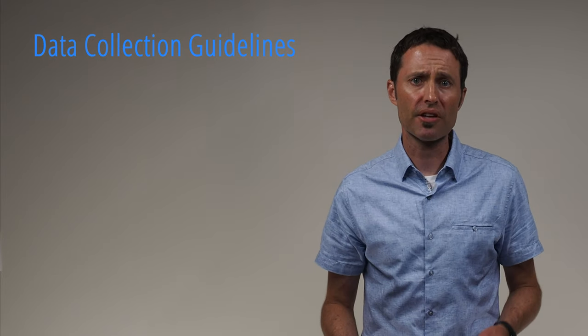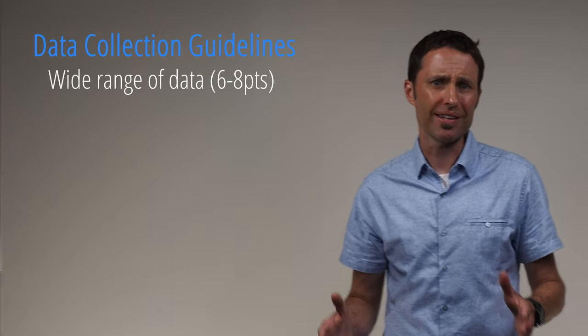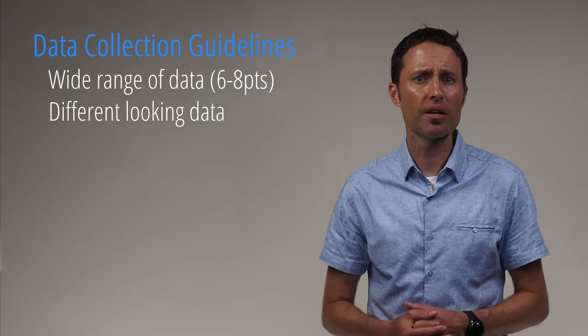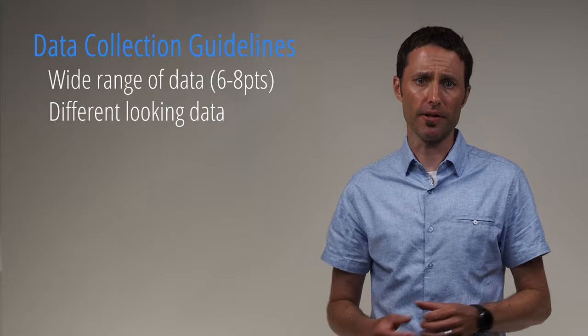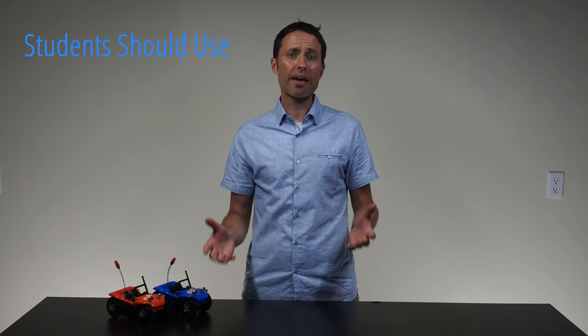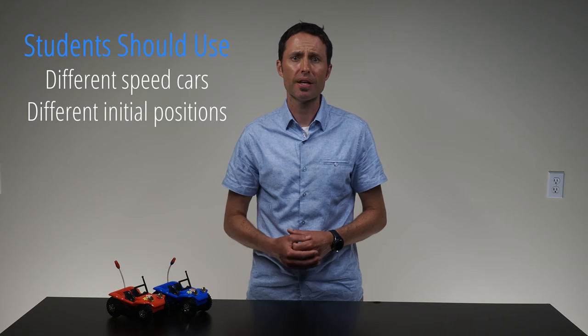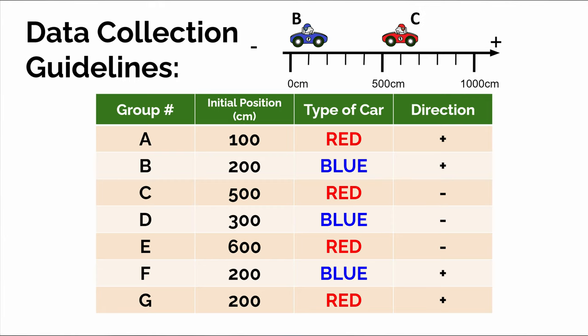A few basic guidelines when determining the type of relationship between two variables is to get a wide range of at least six to eight different values for each variable. Also, during the conclusion discussion, it's beneficial for lab groups to have different looking data. For this lab, have students use different speed cars, start at different initial positions, and move in different directions. It's helpful to pre-assign these guidelines to each lab group.